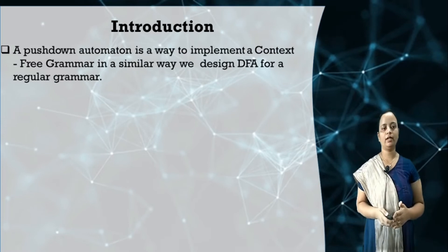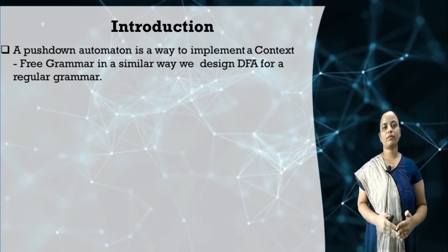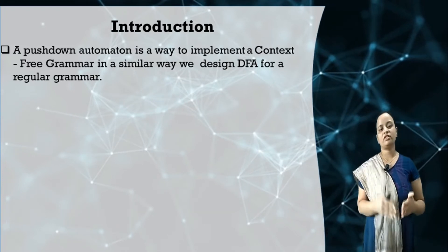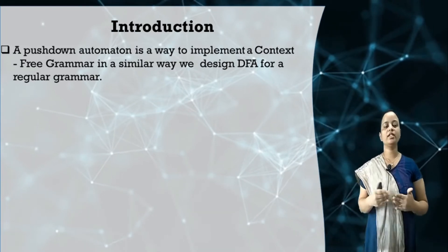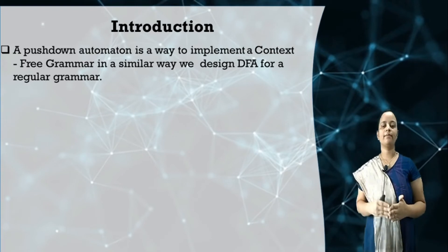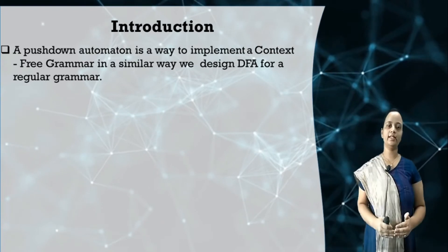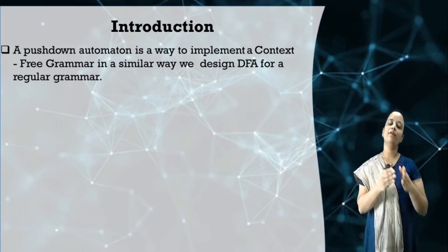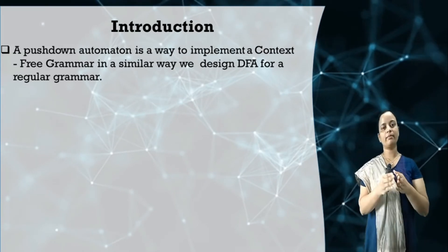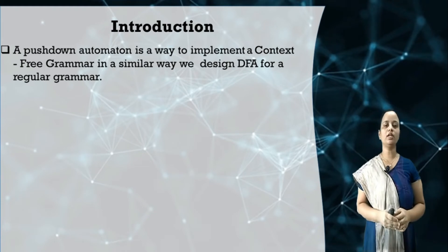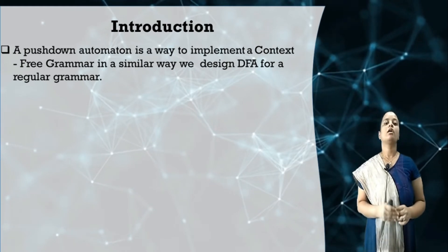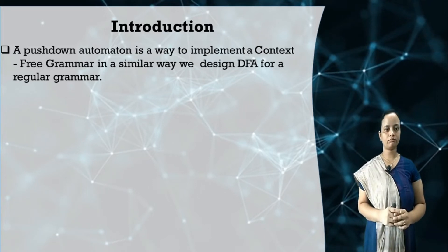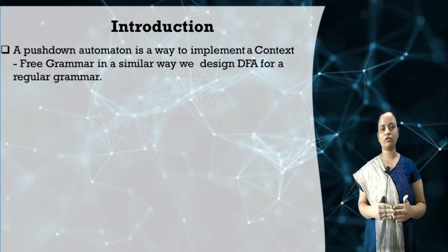What is pushdown automata? A pushdown automata is a way to implement the context-free grammar, which is very similar to designing a DFA which accepts the regular grammar. Regular grammar is accepted by finite automata, whereas pushdown automata is a machine which is used to accept the context-free grammar. Context-free grammar is not accepted by finite automata.